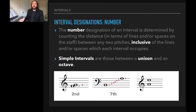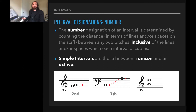And then lastly for this example, we have — in treble clef — A up to E. We'd count A, B, C, D, E, and that gives us a fifth.